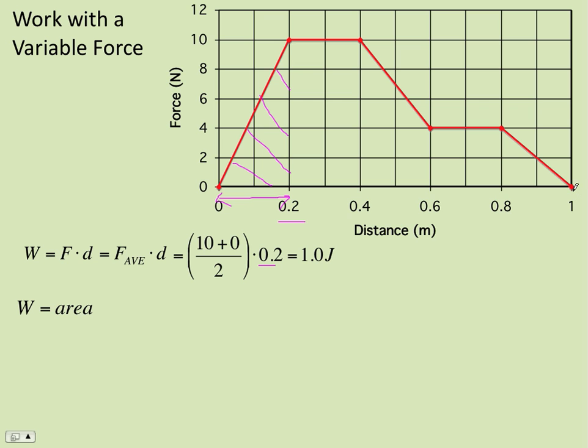You do have to watch it though. If the line goes below 0, then the area between the line and the x-axis would be negative. But in this case, we all have positive work. But just watch that. It's really the area between the curve and the x-axis.